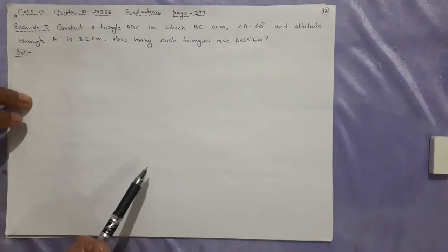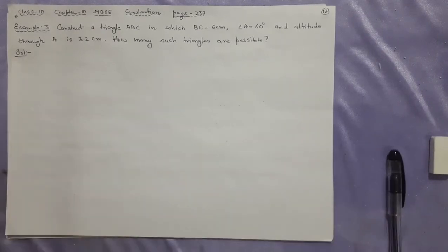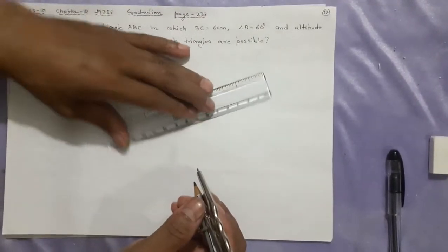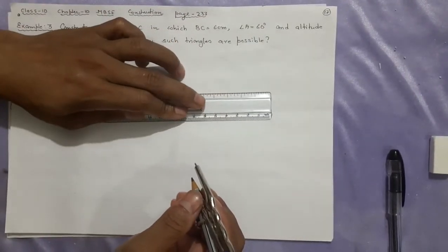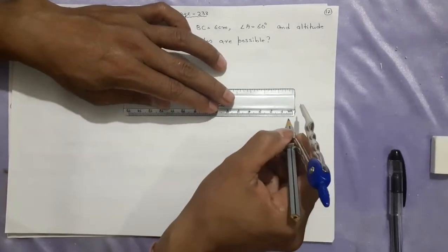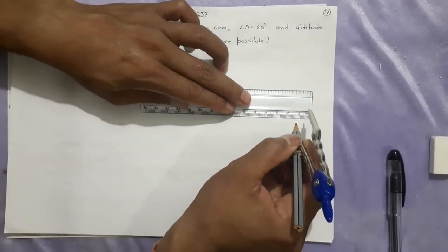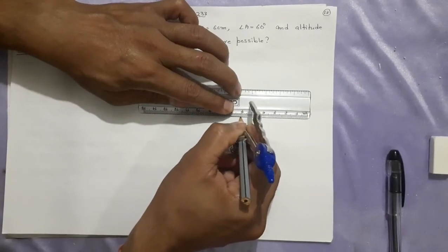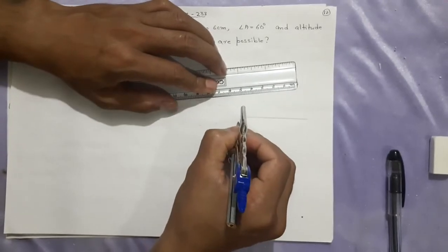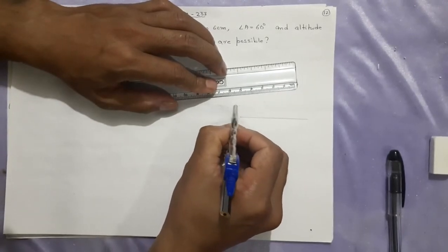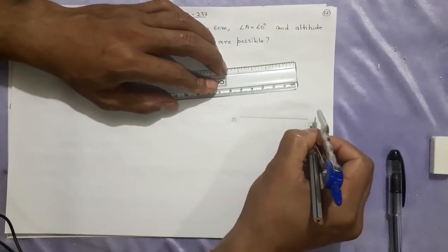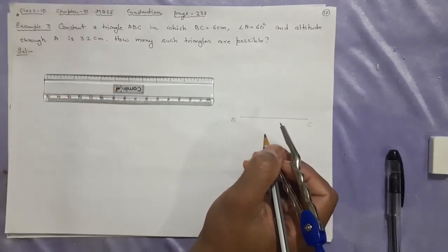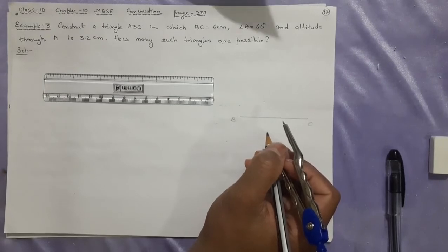Now what I do here is first I will take the BC. BC should be 6 cm. Let's take it. I will take a little bit here. BC is 6 cm, you can see here. Call it B, call it C. Here BC done.